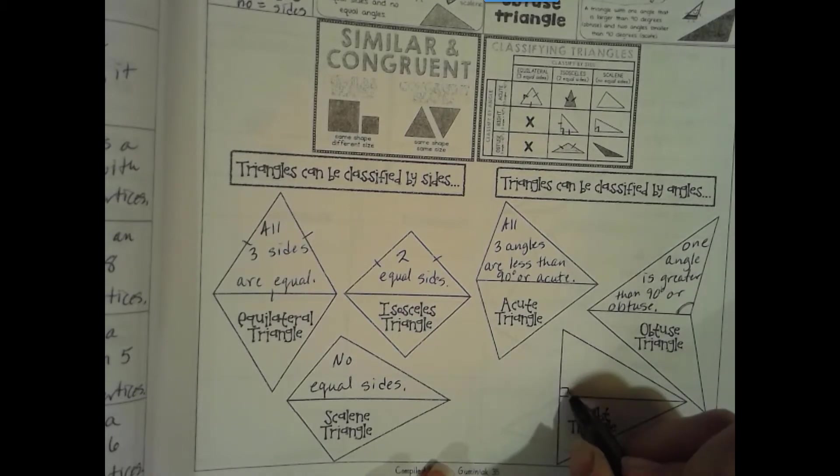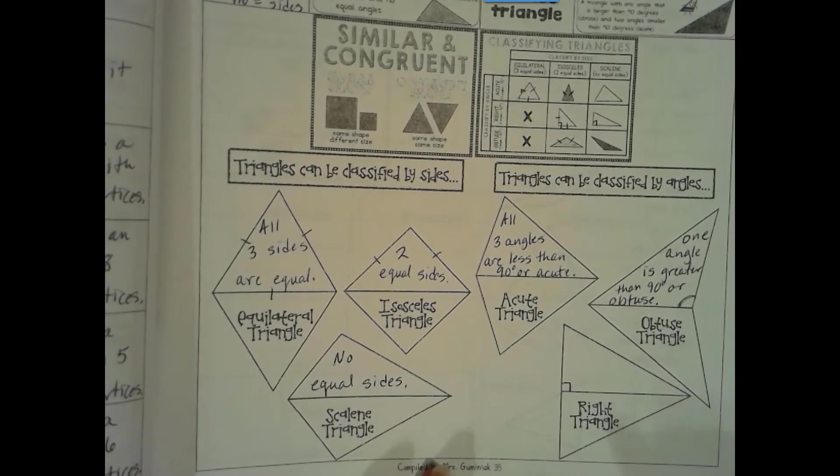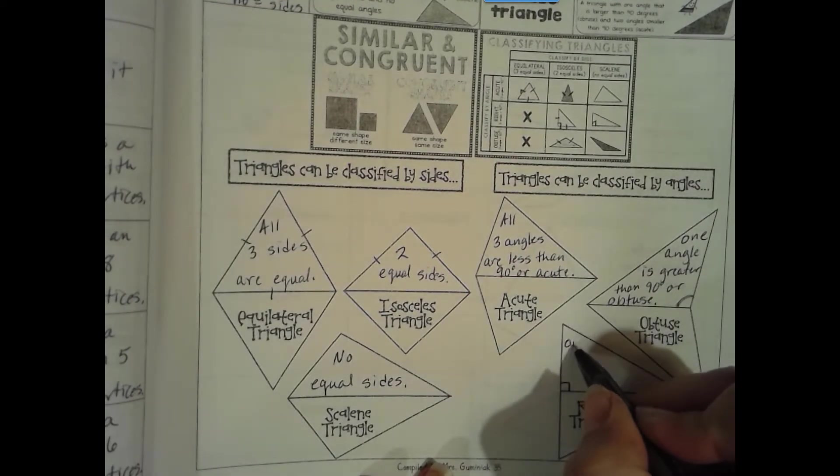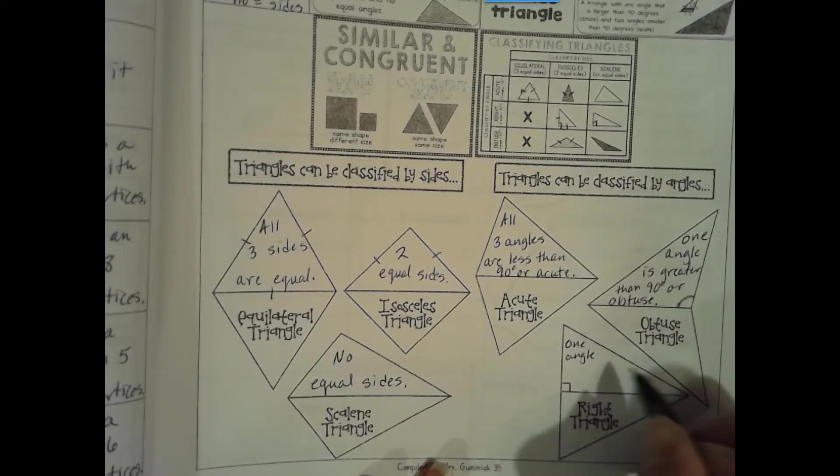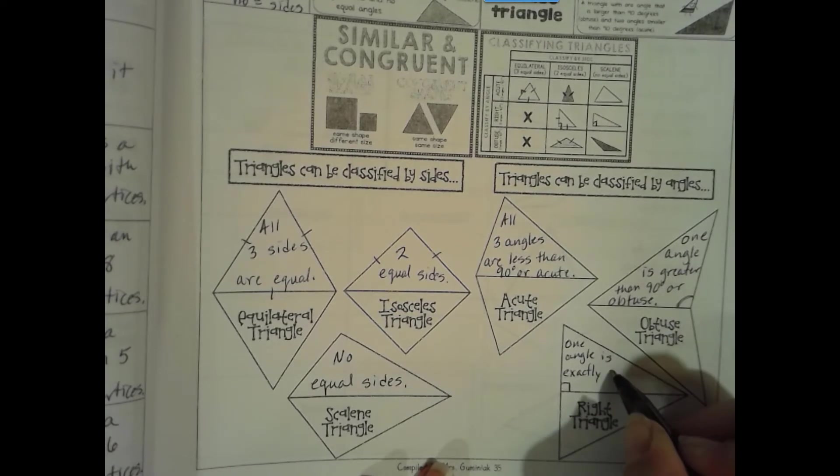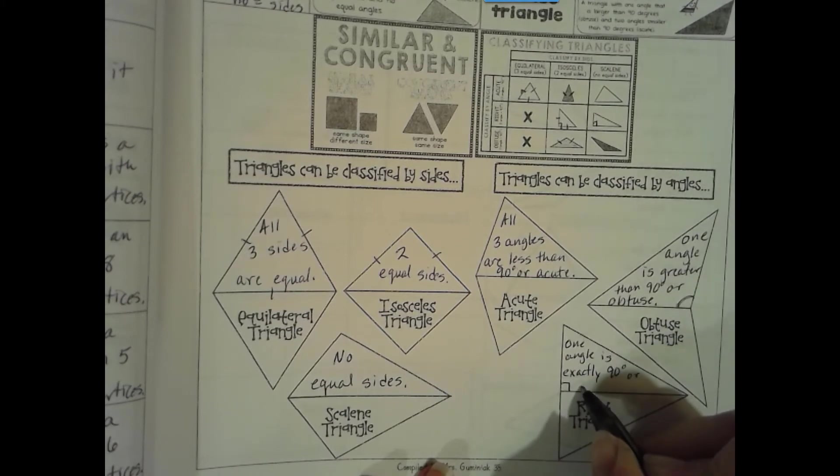And then here, we just need one right angle. One angle is exactly 90 degrees or a right angle.